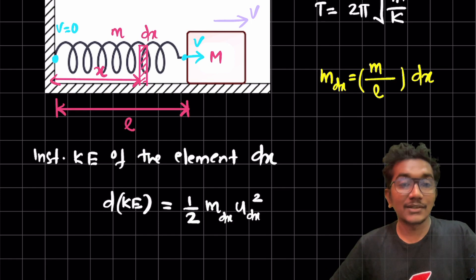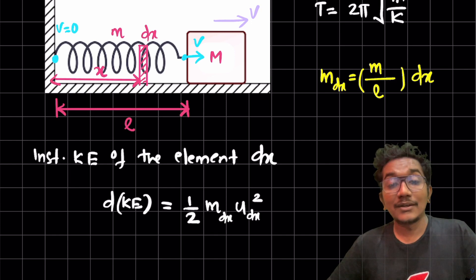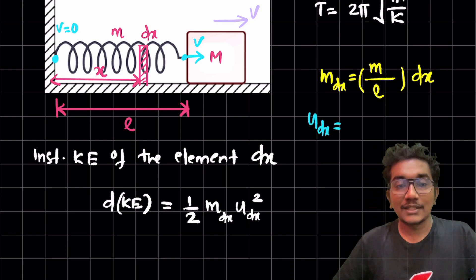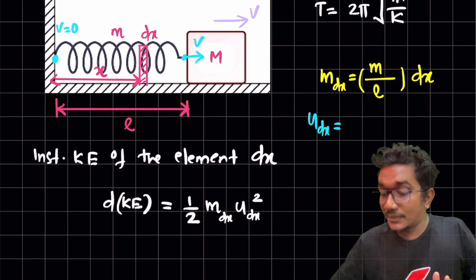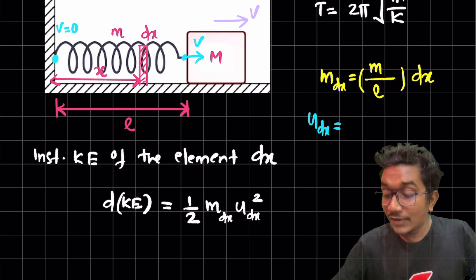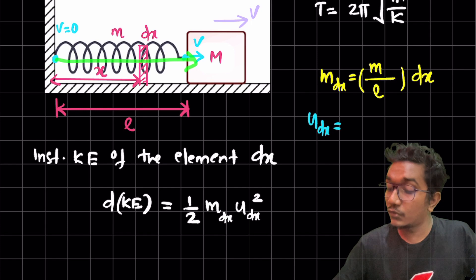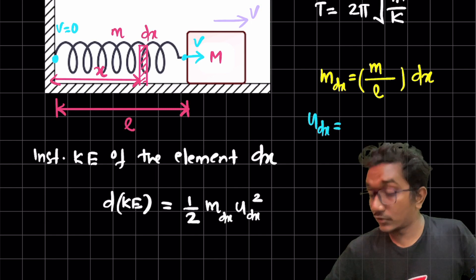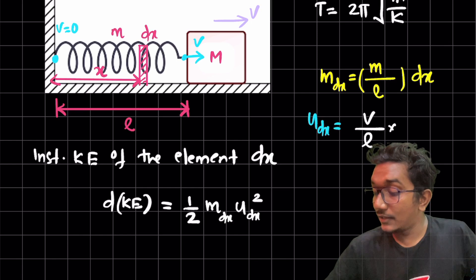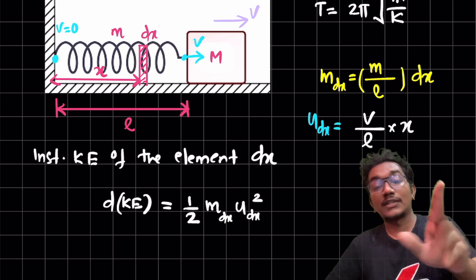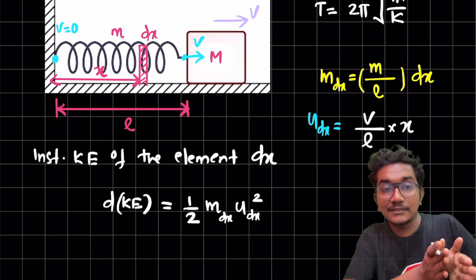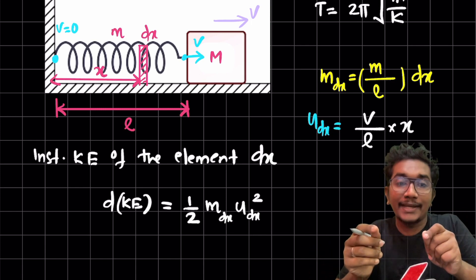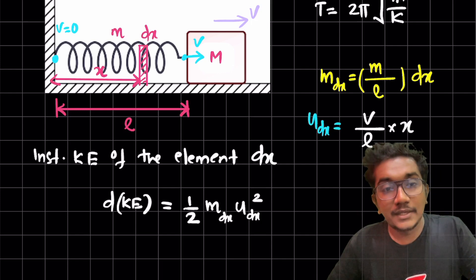The most important part is: how much is the velocity of that small portion dx? The velocity at the fixed end is 0, and it increases uniformly towards V. So at position x, the velocity is (v/l)·x. Since velocity increases uniformly from 0 to v, at the point x, the velocity of the element dx is v·x/l.